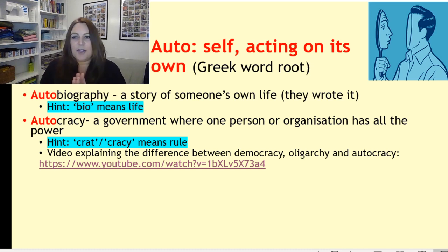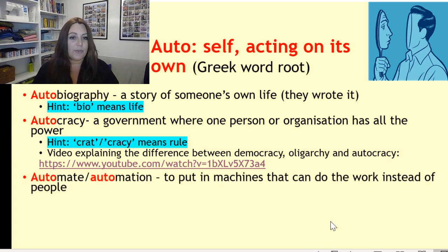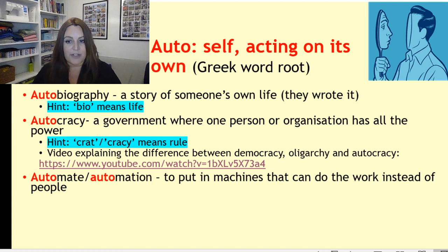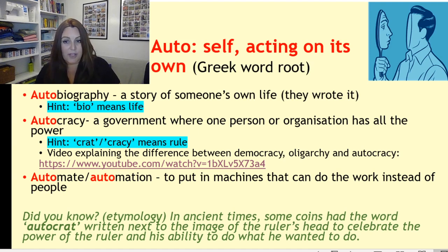So let's go back to the PowerPoint. You can see where 'auto' comes from with autocracy — makes complete sense. And automate, automation — to put in machines that can do the work instead of people. So you can see how this root word of 'auto' works with all of these other words. Automation means it's doing the work instead of people.